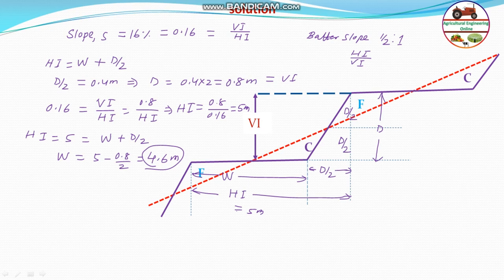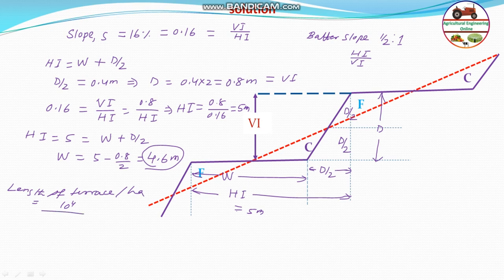The second part — we don't necessarily need to calculate this if appearing in the exam and time is short. But if 4.6 had appeared in multiple options, we would need to find the earthwork requirement as well. The length of terrace per hectare equals 1 hectare (10,000 m²) divided by the horizontal interval of 5 meter, giving a total terrace length of 2000 meter per hectare.